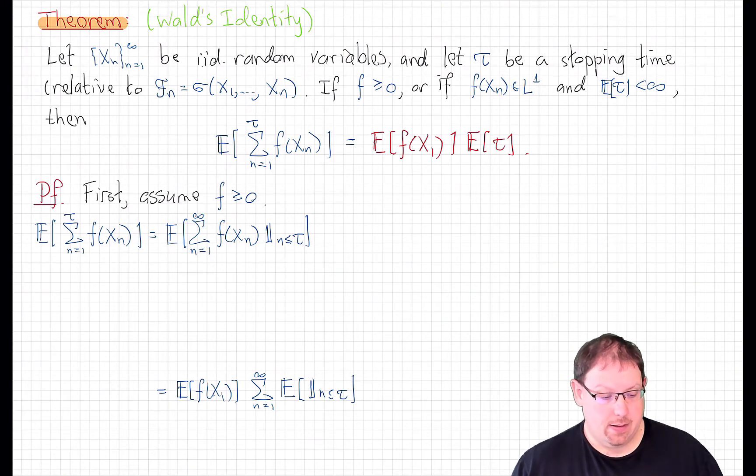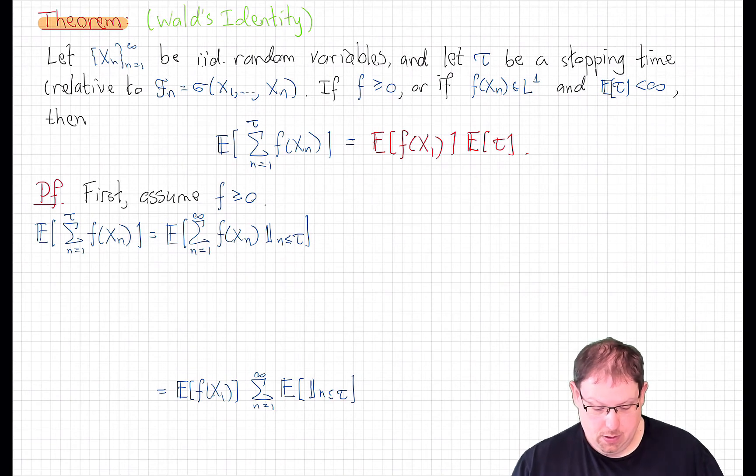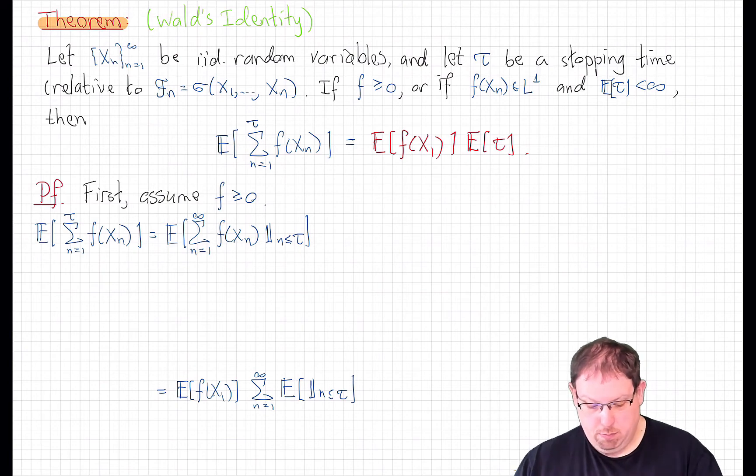So let's prove that right now. We'll start under the assumption that f is non-negative, which will handle the coin tossing example we just examined. Then we'll circle back to say what kinds of convergence conditions are required in the case where f is not necessarily positive. The expected value that we're interested in, we can write as the expected value of the countably infinite sum of all these terms times this random variable. We're cutting off that sum to be zero when n is bigger than tau. I'm going to put the expected value inside the sum, and that's perfectly justified by Tonelli's theorem, because all the terms inside are measurable and non-negative when f is a non-negative function.